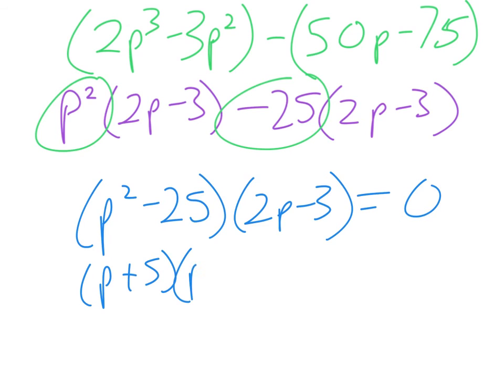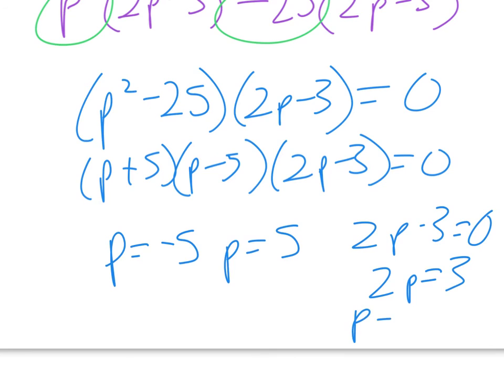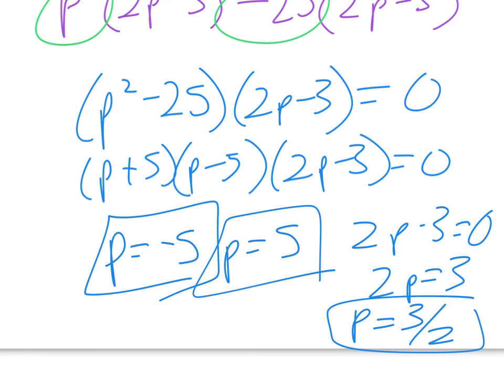So this does factor again, p plus 5 times p minus 5, and the 2p minus 3. And so we do end up with three solutions, p equals negative 5, p equals positive 5, and the 2p minus 3 equals 0 would give us 2p equals 3, so p is equal to 3 halves. And so there are those three solutions for that one. So that's the end of our practice test. Hopefully that was helpful, and thanks for watching.